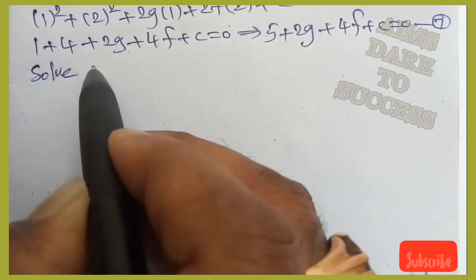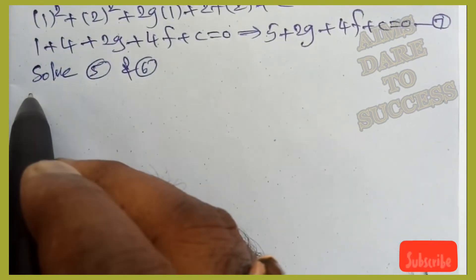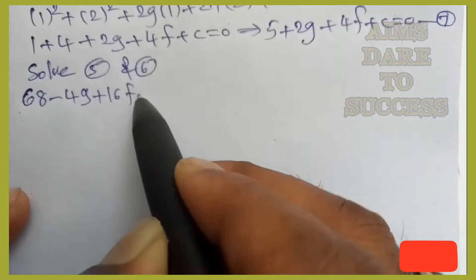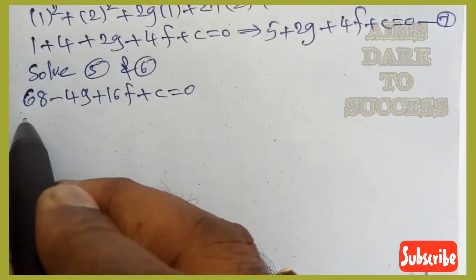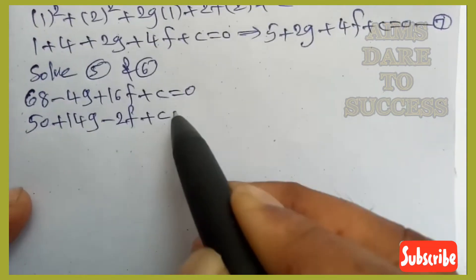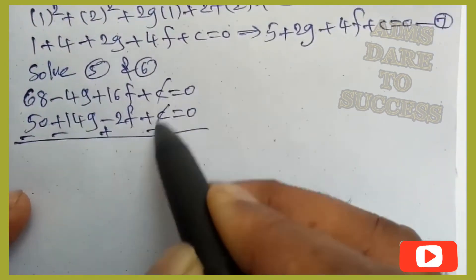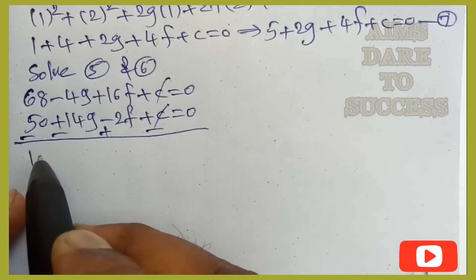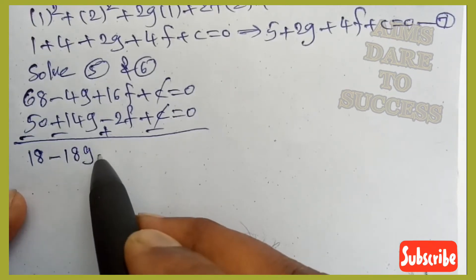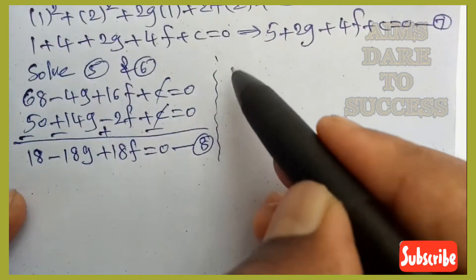Solving equations 5 and 6 to eliminate c: equation 5 is 68−4g+16f+c=0, equation 6 is 50+14g−2f+c=0. Subtracting: 68−50 is 18, −4g−14g is −18g, 16f+2f is 18f, c cancels. So 18−18g+18f=0 (equation 8).